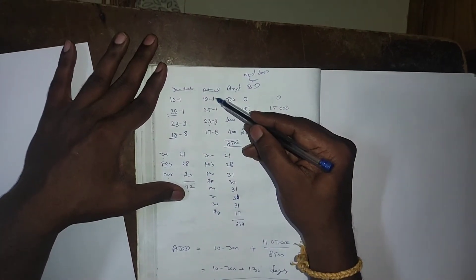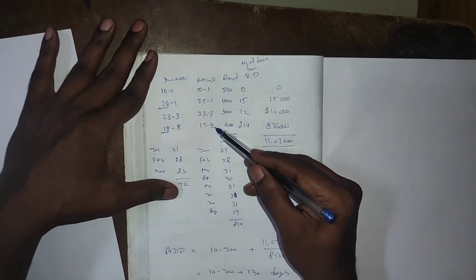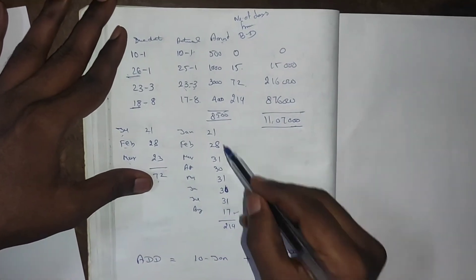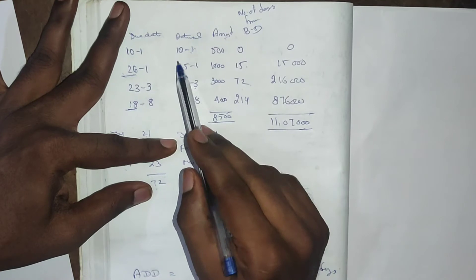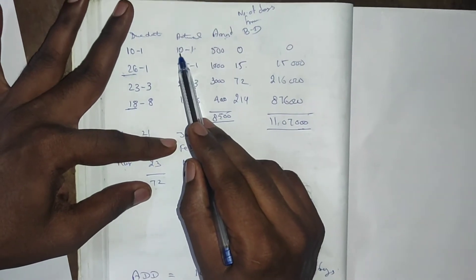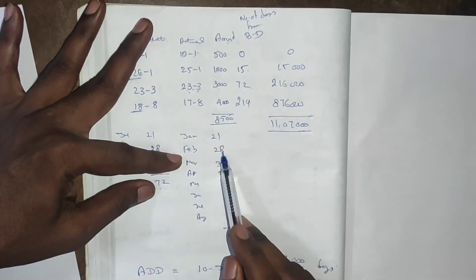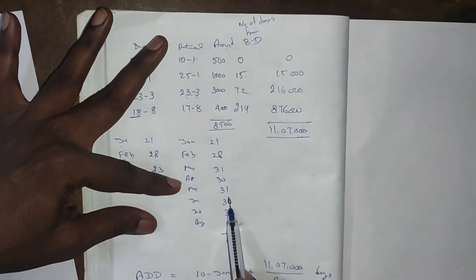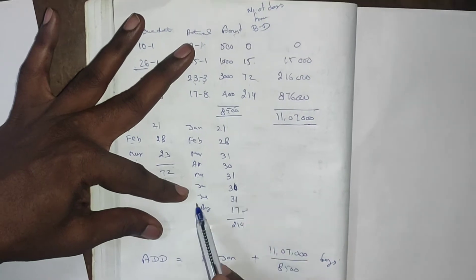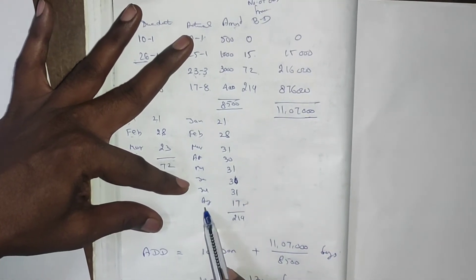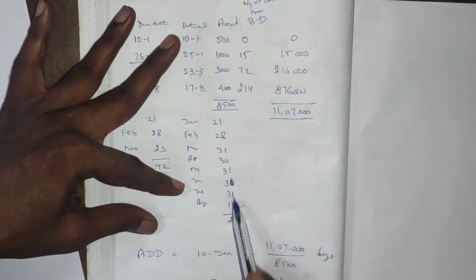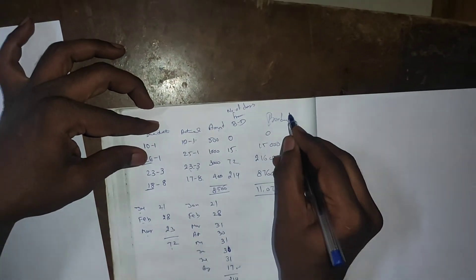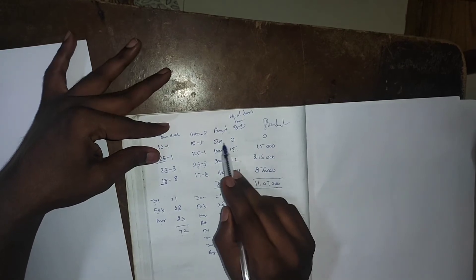From 10th January to 17th August, calculate the number of days: remaining days in January are 21 days, February 28 days, March 31 days, April 30 days, May 31 days, June 30 days, July 31 days, August up to the 17th is 17 days. The total number of days is 219.